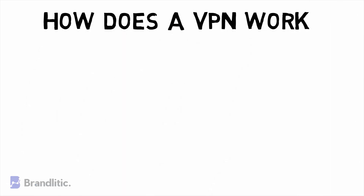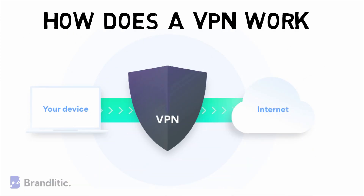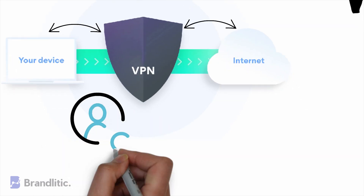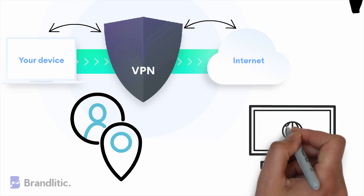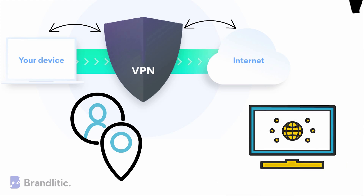How does a VPN work? When you browse the web while connected to a VPN, your computer contacts the website through an encrypted VPN connection. The VPN forwards the request for you and forwards the response from the website back through the secure connection. Because your computer behaves as if it's on the network, this allows you to securely access local network resources even when you are on the other side of the world.